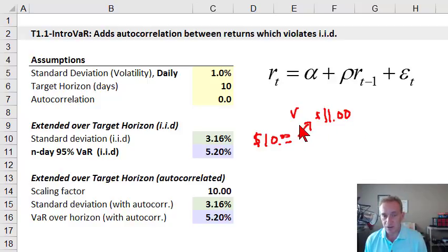However, if they are positively autocorrelated, and let me just note there, I could just say correlation. Autocorrelation is, in this context, just correlation over time.